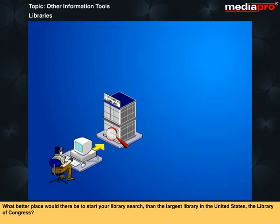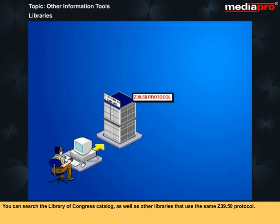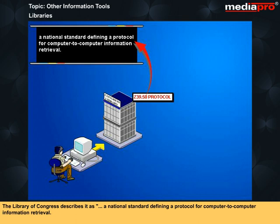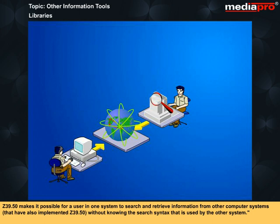What better place would there be to start your library search than the largest library in the United States — the Library of Congress? You can search the Library of Congress catalog as well as other libraries that use the same Z39.50 protocol. The Library of Congress describes Z39.50 as a national standard defining a protocol for computer-to-computer information retrieval. Z39.50 makes it possible for a user in one system to search and retrieve information from other computer systems that have also implemented Z39.50, without knowing the search syntax used by the other system.